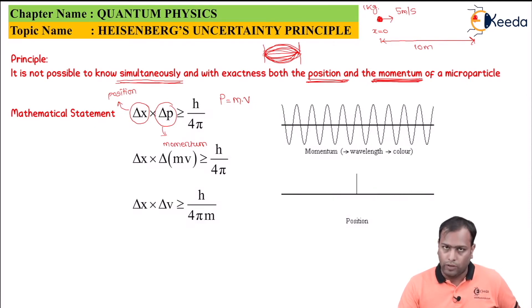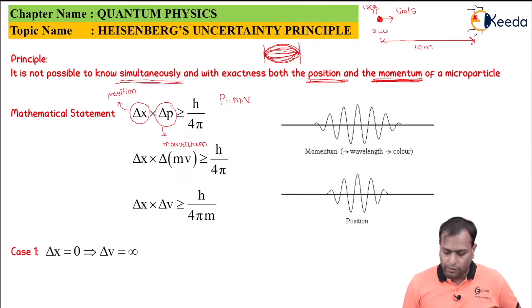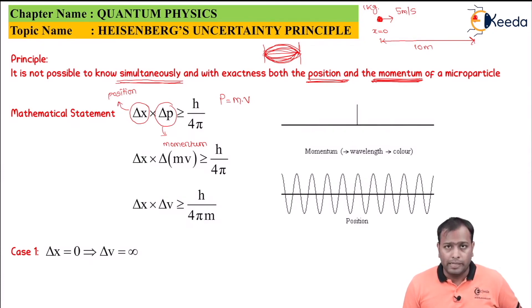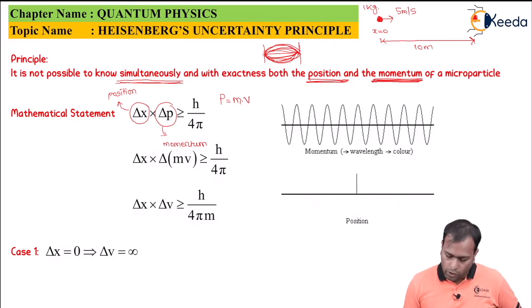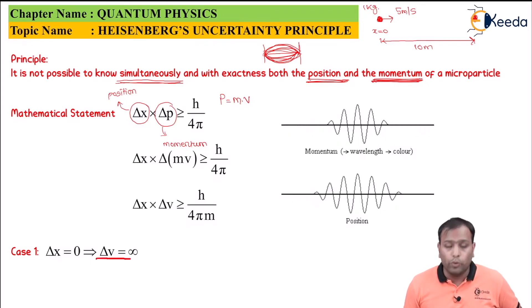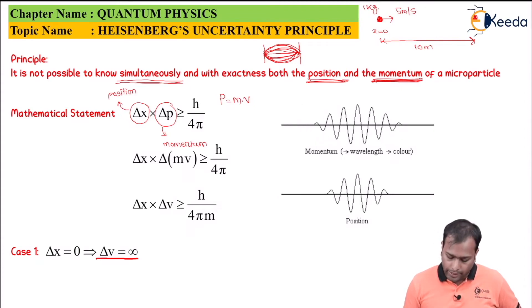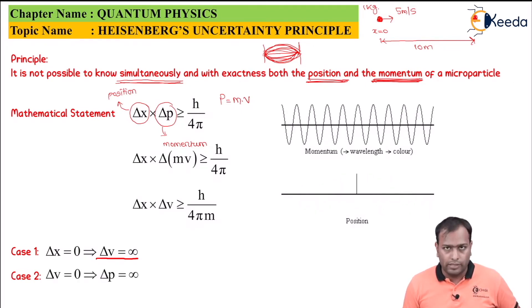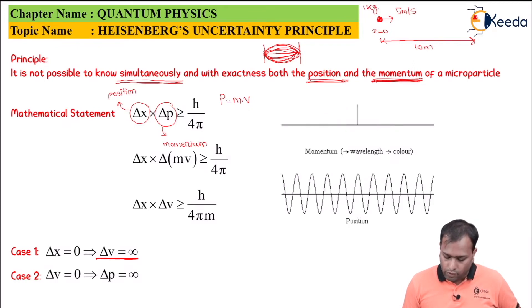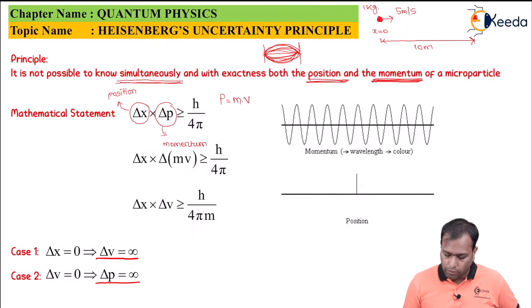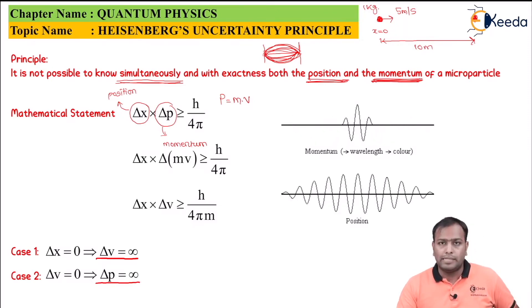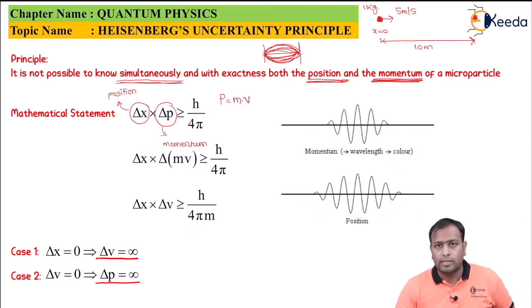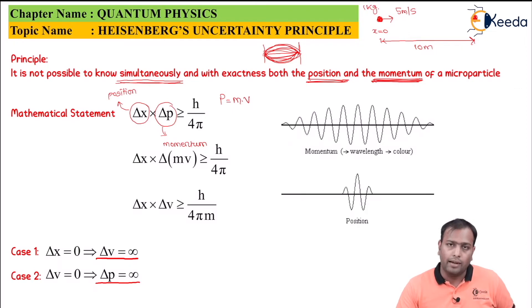Let's consider two cases. Case one: if Δx = 0, meaning there is no uncertainty in position and I can determine the exact position of the particle, then Δv goes to infinity to maintain the equation — so there is again uncertainty in velocity. Case two: when I can determine the exact velocity with no deviation in velocity, then Δx goes to infinity. There is always a trade-off between position and momentum.